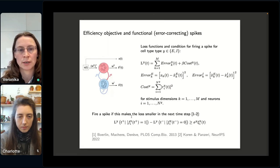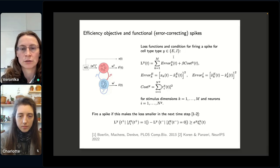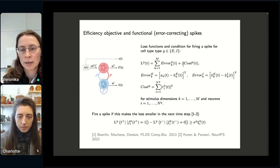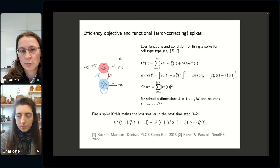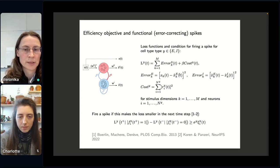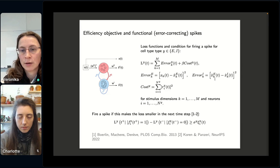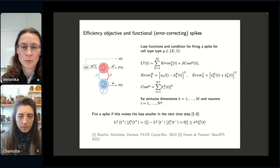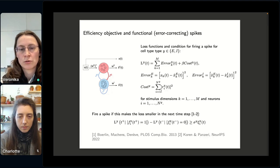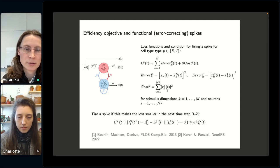So to impose efficiency, we pose a loss function. This loss function is very simple. It just takes into account some encoding error of the network and some cost on spiking. And the two quantities are weighted with the constant beta. And now the excitatory population will have as encoding error the square distance between the target signal and the readout of the spiking activity from excitatory neurons, while the inhibitory population will have as encoding error the distance between the two readouts of the excitatory and of the inhibitory population. And then both populations also have a cost on spiking, which is simply a sum of low-pass filtered spike trains across neurons.